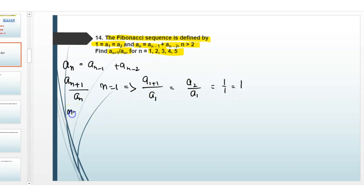For N equals 2, it will be A3 divided by A2. A3 equals A2 plus A1, which is 1 plus 1 equals 2. Then 2 divided by 1 equals 2.